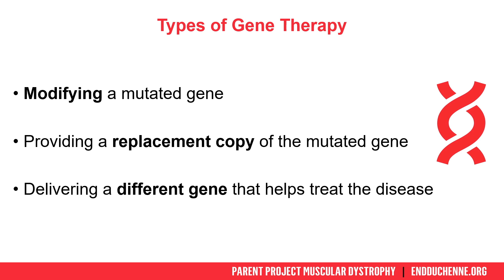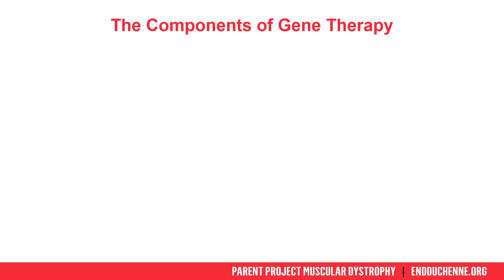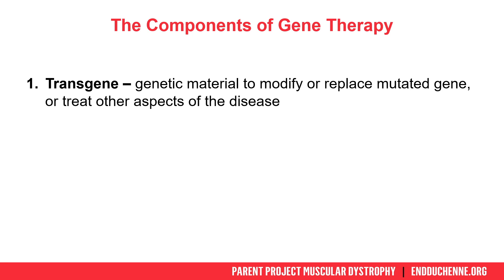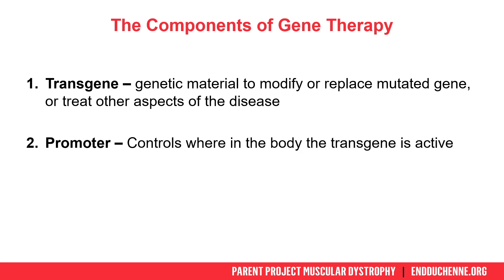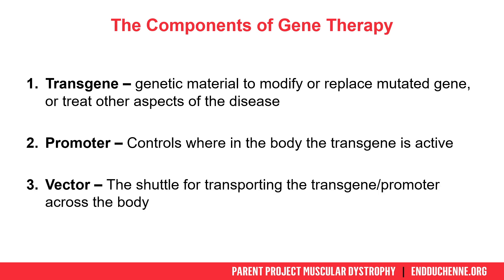When someone receives gene therapy, what are they actually being treated with? There are three main components to gene therapy. The first two components are the genetic materials that are going to lead to new protein production: the transgene, which is the replacement, modifier, or surrogate gene, and the promoter, which controls where that transgene is turned on. The third component is the vector, which shuttles that genetic material into the body.